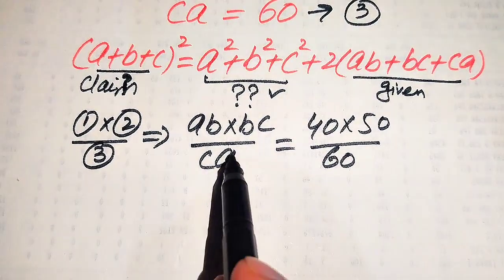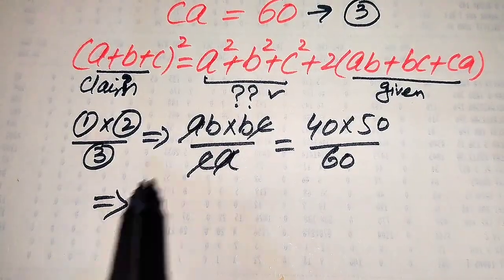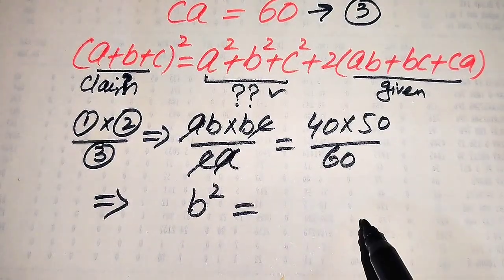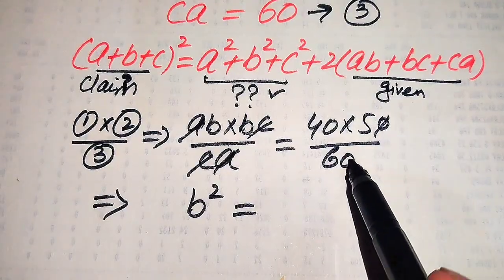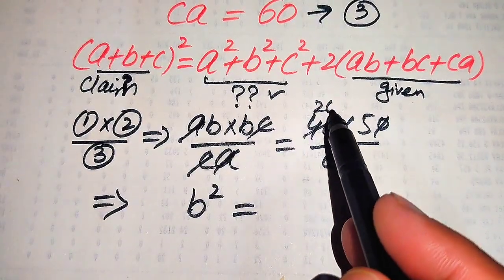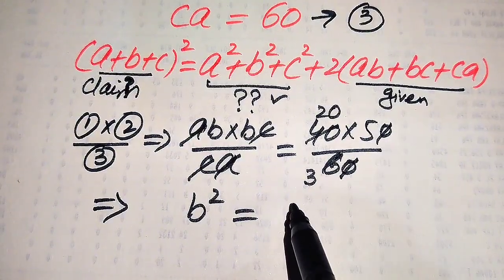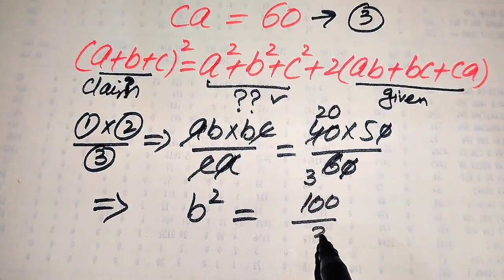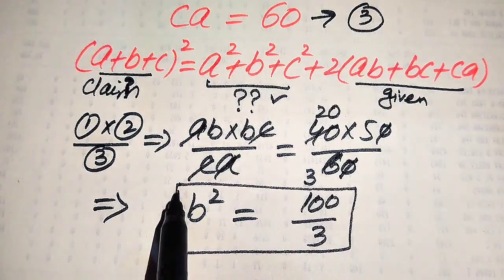Now, A cancels with A and C cancels with C. We get B times B, which becomes B square. On the right-hand side, the zeros cancel, giving us 2 times 2 is 4, and we get 100 divided by 3. This is the value of B square.